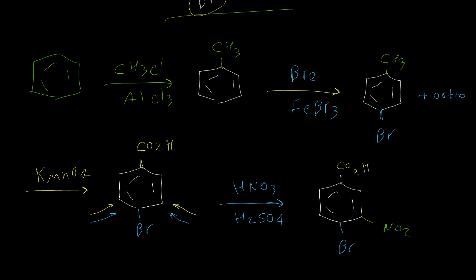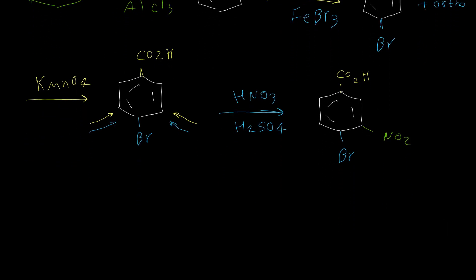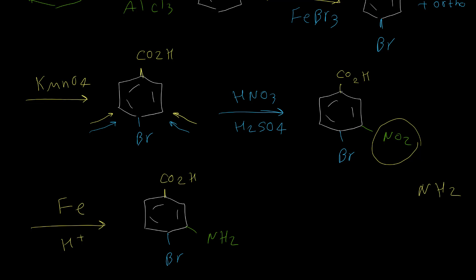Before finishing, I would like to add one more thing. For the NO2 group, we can easily convert it to an NH2 group by reduction. The reducing agent is normally iron in acidic conditions, typically HCl. This reducing agent can only reduce the NO2 group, while the carboxylic acid group remains unchanged during this reduction reaction.